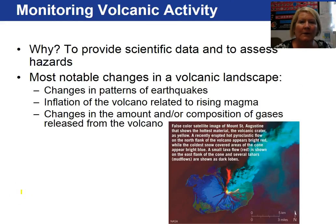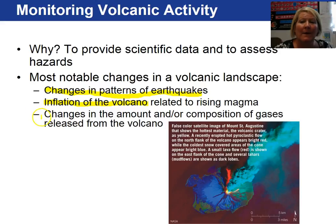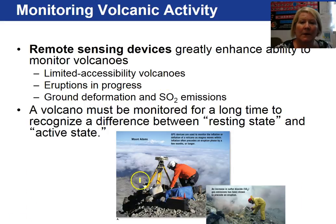Geologists monitor active volcanoes to provide scientific data and assess potential hazards. What scientists look for includes changes in the patterns of earthquakes, which may indicate magma moving underground; the volcano getting larger or inflating because magma is moving into a chamber; and the amounts and composition of volatiles — the gases being released from the volcano. Monitoring of Mount Adams is occurring in this image, done remotely using GPS.